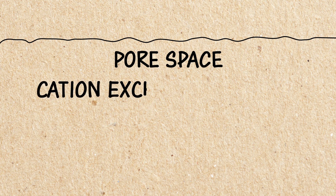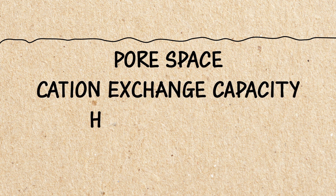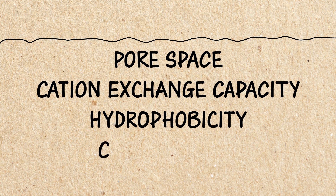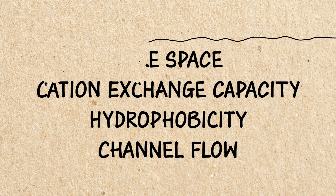These four features of soil, if not managed, can hinder the development of a crop's root system, nutrient availability and uptake, and the fulfillment of the crop's genetic potential.